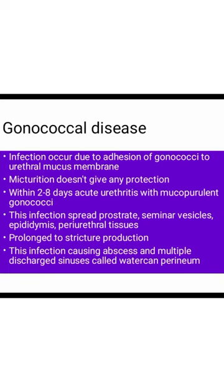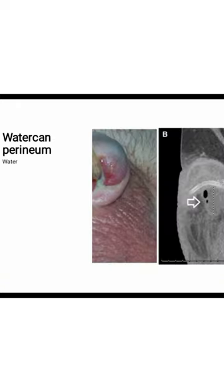In Watering Can Perineum, the infection mainly involves the periurethral tissue, causing abscess and distressed sinuses. This is the picture demonstrating the condition.